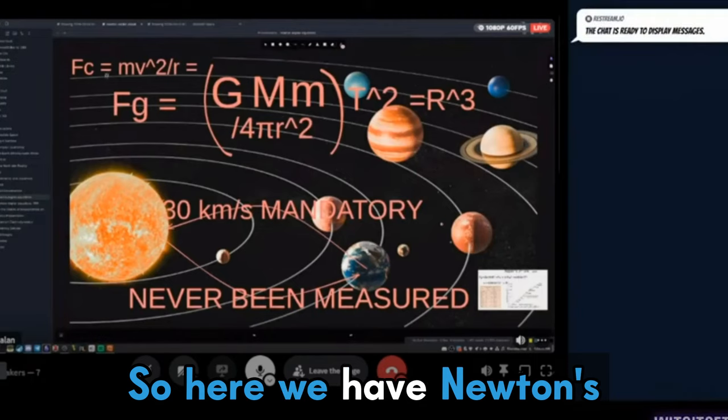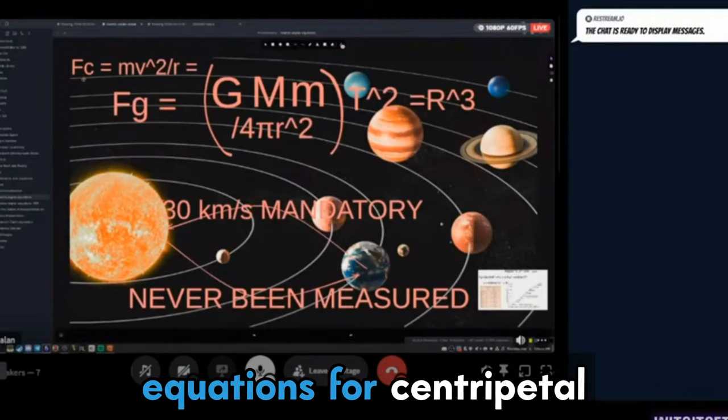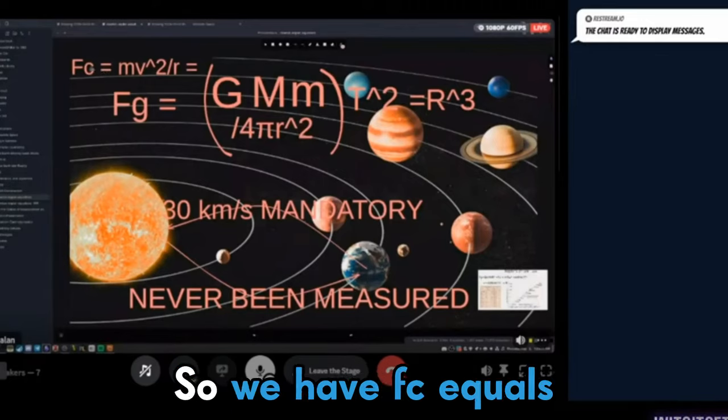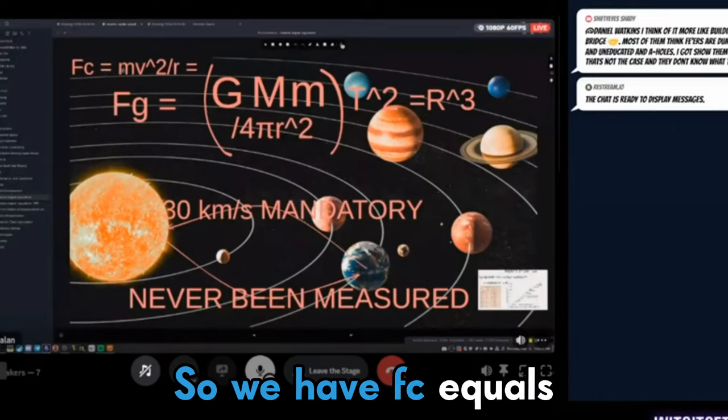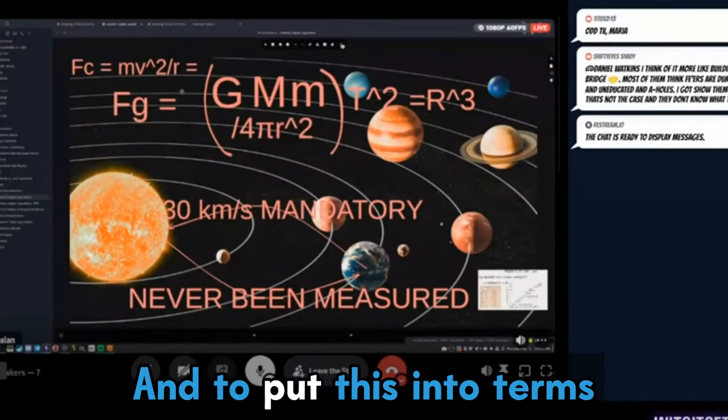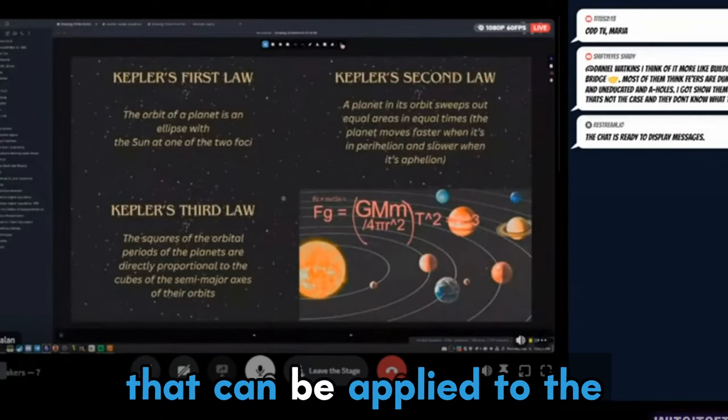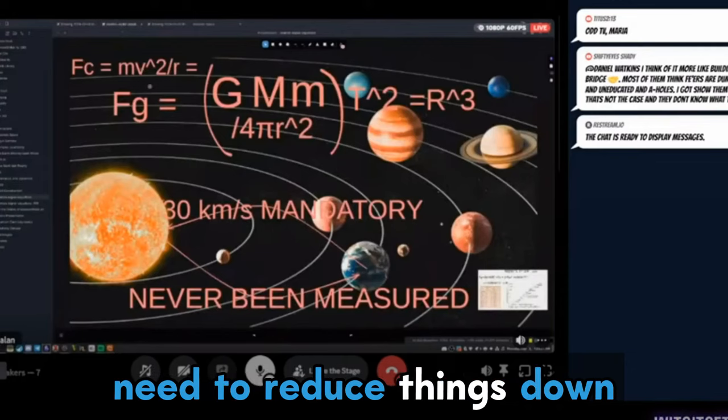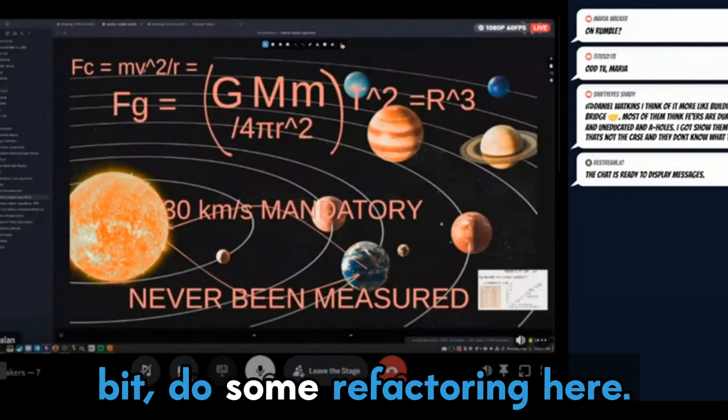So here we have Newton's equations for centripetal force and it's equal to gravitation, right? So we have Fc equals mv squared over r. And to put this into terms that can be applied to the sky with Kepler's laws, we need to reduce things down and break it apart a little bit, do some refactoring here.